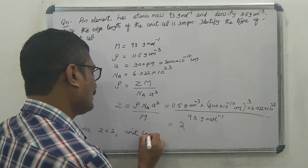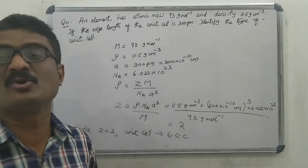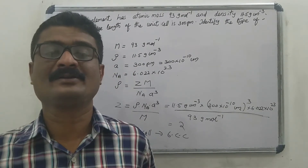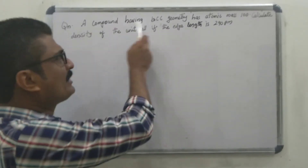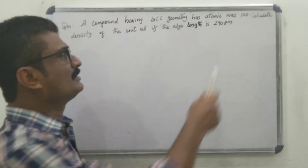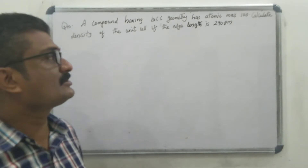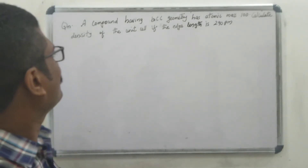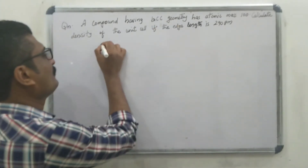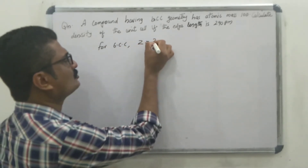Since the value of Z is 2, the unit cell belongs to BCC — body centered cubic type. Next question: a compound having BCC geometry has atomic mass 100. Calculate the density of the unit cell if the edge length is 290 picometer.